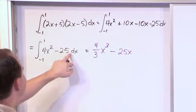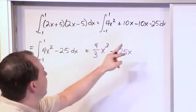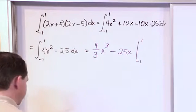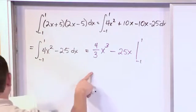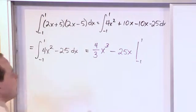And the reason it's 25x, again, is there's an implied x to the 0 power, so 25 over 1x to the 1 power. Now we are evaluating this from negative 1 to 1. So you see where the difficulty is. You've got this 4 thirds running around, so that's just going to introduce a lot of fractions whenever you actually evaluate your limits of integration.